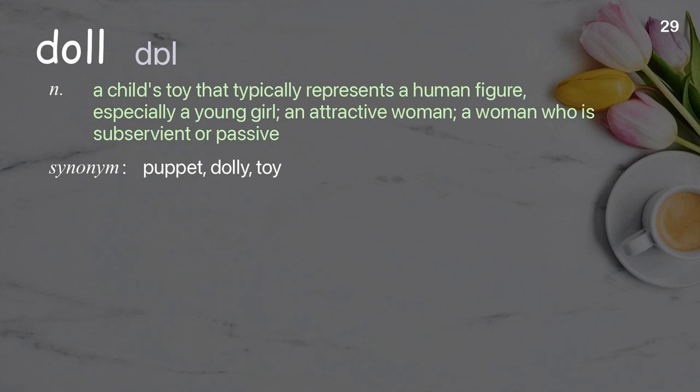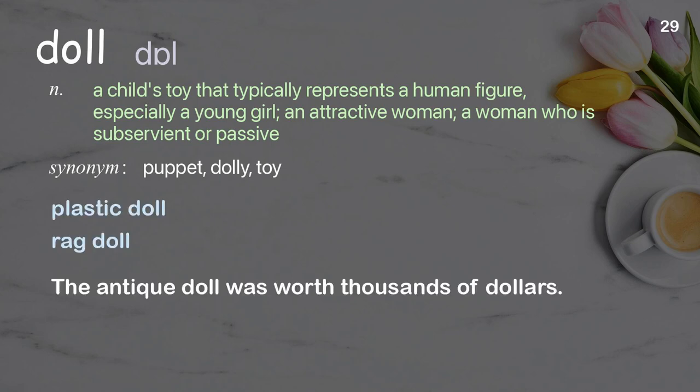Doll: a child's toy that typically represents a human figure, especially a young girl; also an attractive woman, or a woman who is subservient or passive. Examples: plastic doll, rag doll. The antique doll was worth thousands of dollars.